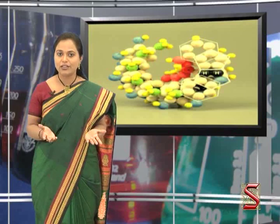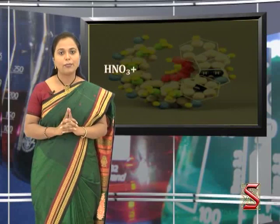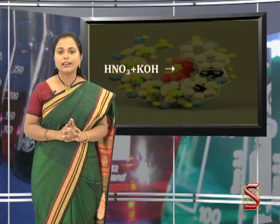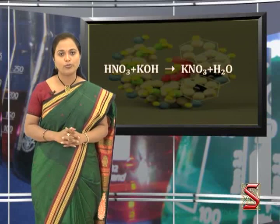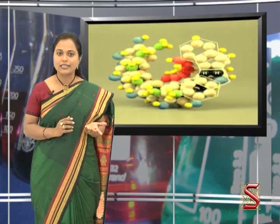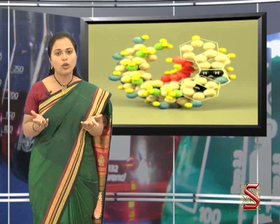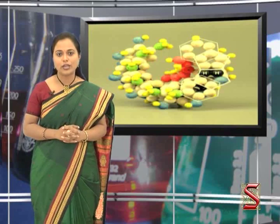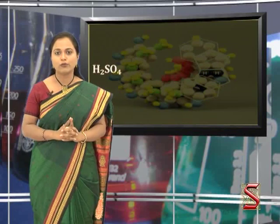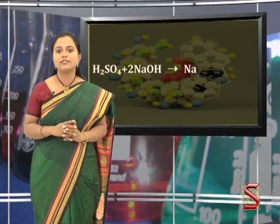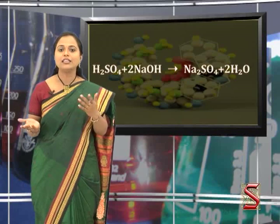Here are some more examples to illustrate this property. Nitric acid reacts with potassium hydroxide to give potassium nitrate and water: HNO₃ + KOH → KNO₃ + H₂O. Similarly, sulfuric acid reacts with sodium hydroxide to give sodium sulfate and water: H₂SO₄ + NaOH → Na₂SO₄ + 2H₂O.